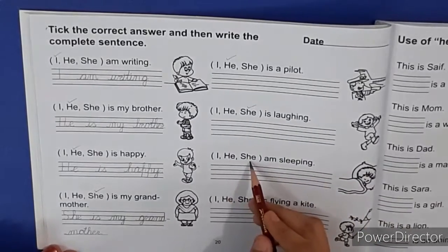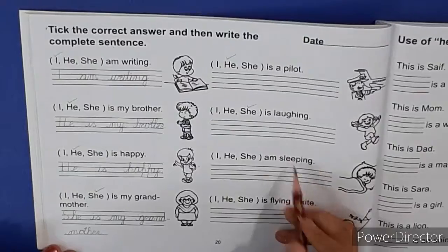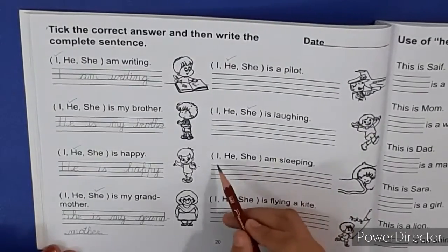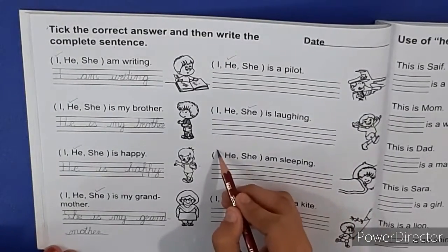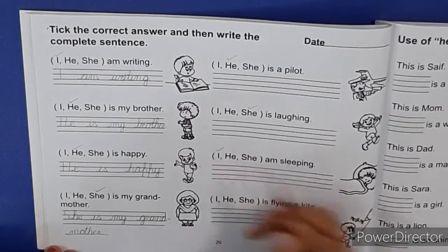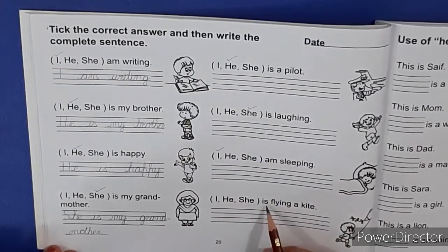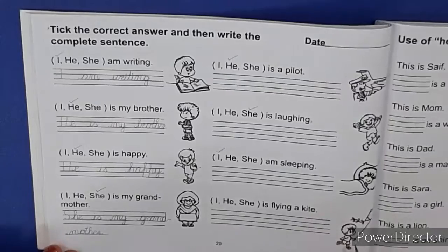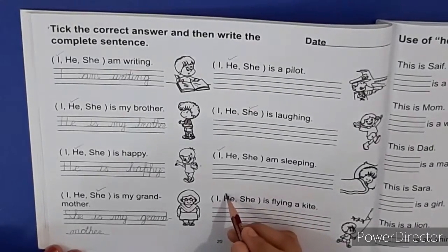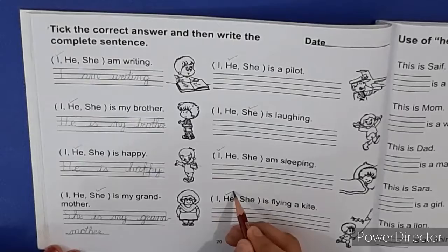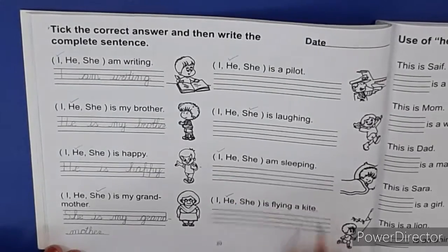I, he, she — is sleeping. प्यारे बच्चों मैंने आपको पहले भी बताया था कि I के साथ हमेशा am आता है. तो हम I पर tick लगाएंगे. I, he, she — is flying a kite. यह देखें यह boy है, तो boy के लिए हम he use करते हैं. तो हम he पर tick लगाएंगे. He is flying a kite.